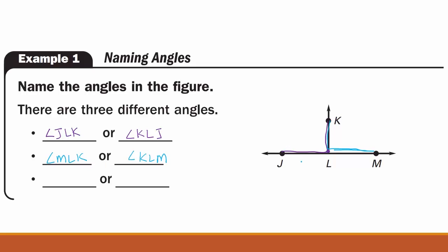Again, the vertex is at the center of the angle so we're looking at this angle right here. The last angle that we have is basically a straight line and so we can write it as angle JLM or write it the other way as angle MLJ.